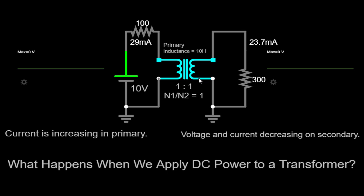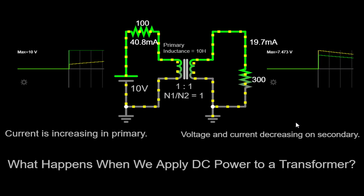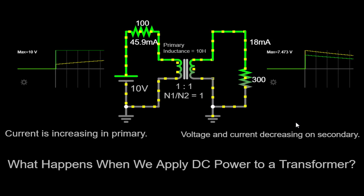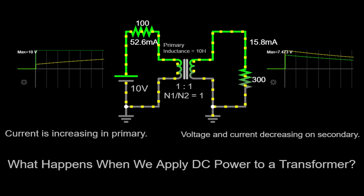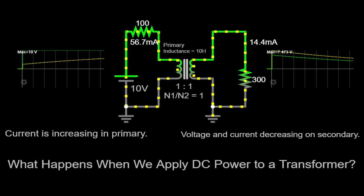Now, let's explore what happens when we connect a DC power source to a transformer. DC power, unlike AC, has a constant voltage polarity, meaning there is no continuous fluctuation between positive and negative cycles. So, what happens when we feed a transformer with DC?